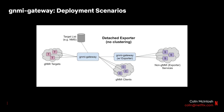Going back to a scenario without clustering, you also have the ability to detach the exporter components from GNMI Gateway and run them on a separate server. We find this useful where an exporter is performing a non-trivial workload requiring dedicated resources, or where we want to separate GNMI Gateway and an exporter for fine deployment control. In this case, the exporter on the right-hand side forms a GNMI connection into the GNMI Gateway instance on the left to subscribe to the telemetry stream, and then forwards that data to the non-GNMI services.